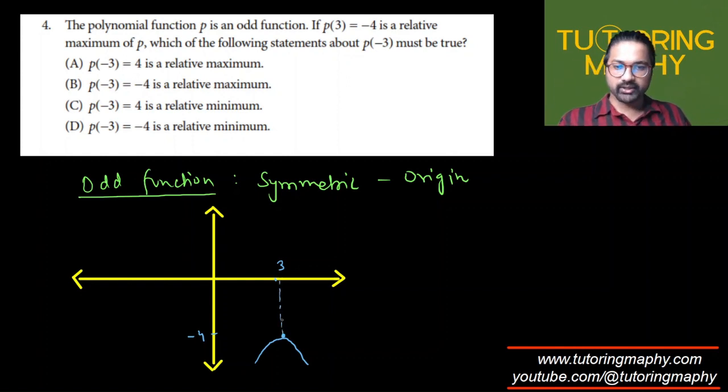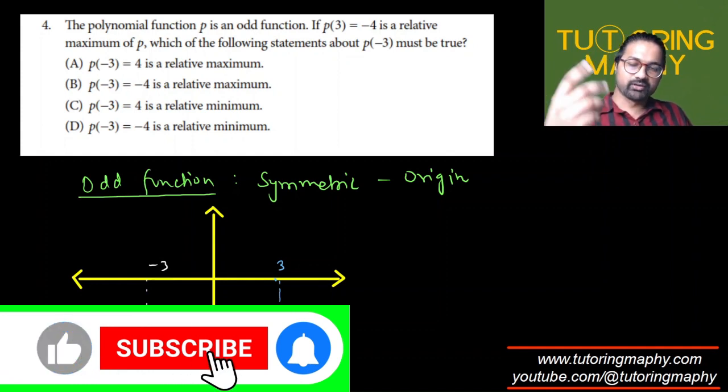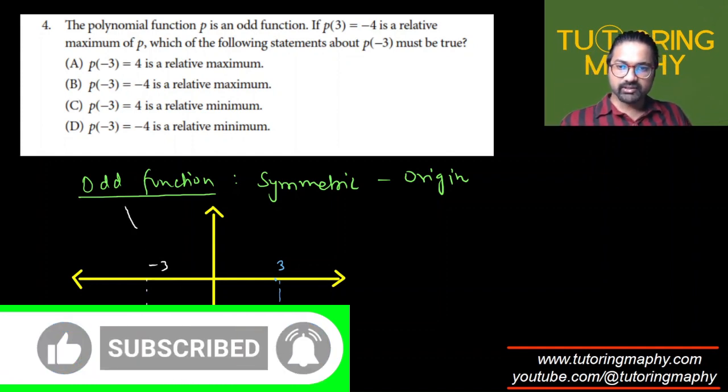Now this is symmetric about origin. How to draw a function which is symmetric about origin? We flip it around x-axis and y-axis both, in any order. So let's say I flip this about y-axis—it will look like this. When I flip around y-axis, this point will become (-3, -4). When I flip around x-axis, this will become like this.